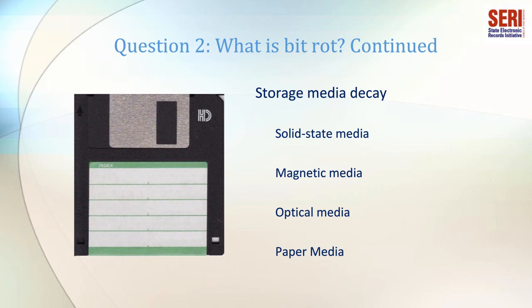Optical media, such as CD-R, DVD-R, and BD-R, may experience data decay from the breakdown of the material onto which the data is stored. Even archival quality disks do not necessarily provide a permanent solution to data decay or other types of data corruption beyond a certain amount of time. Paper media, such as punch cards and punch tape, may also experience literal rotting.